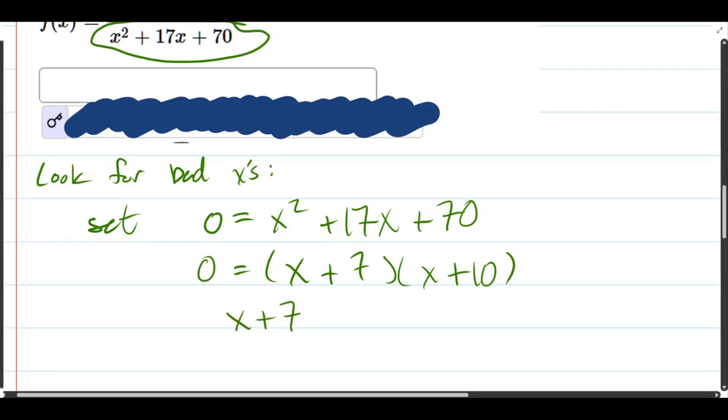So the zero product property, either the first term x plus 7 equals 0, or the second term x plus 10 equals 0. Subtract 7, x equals negative 7, or x equals negative 10.